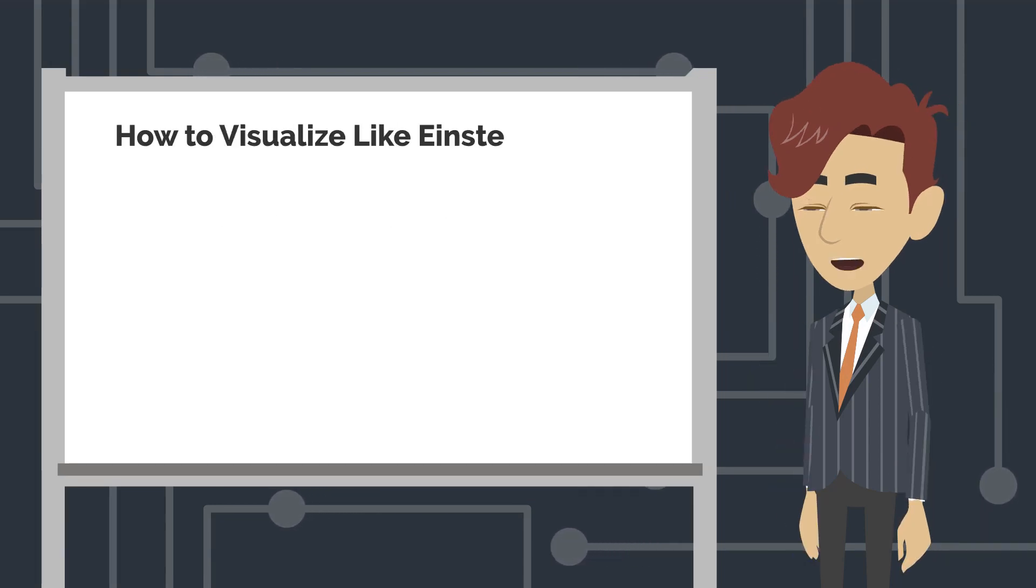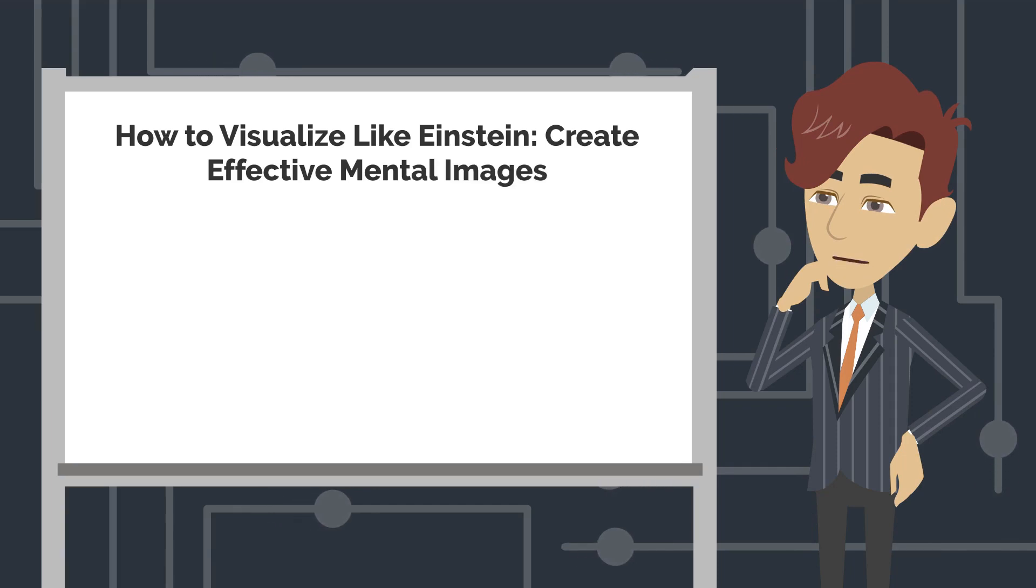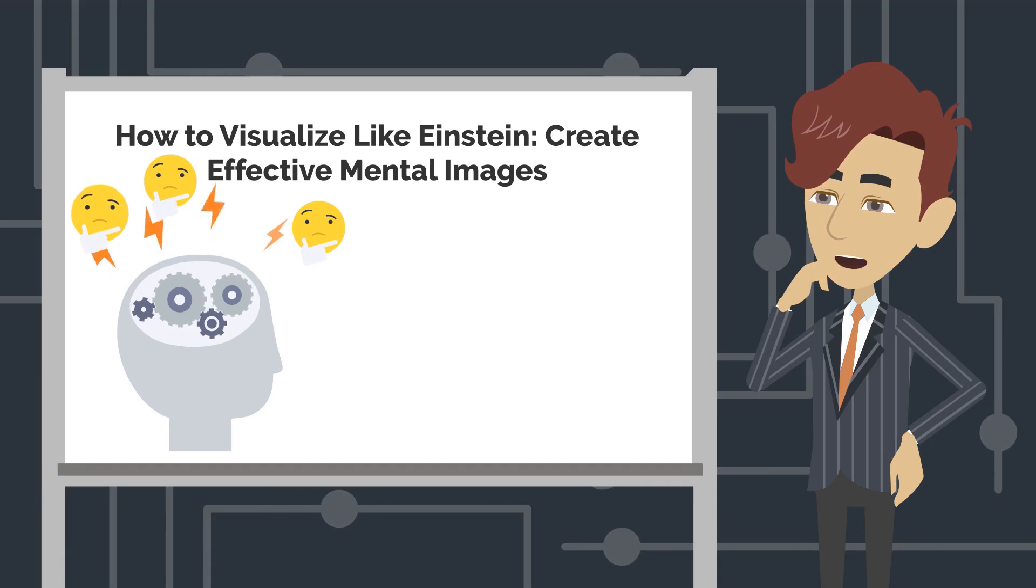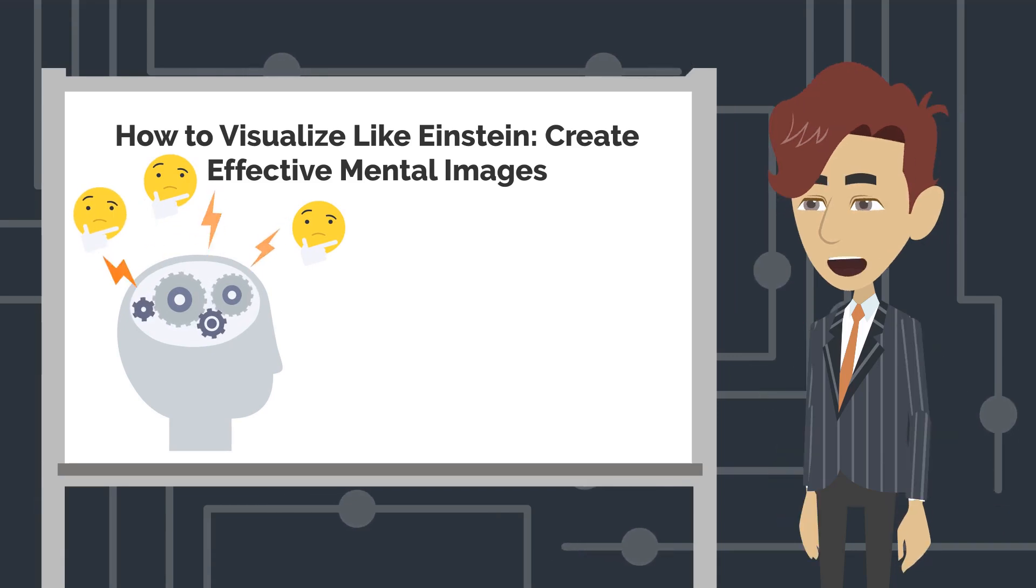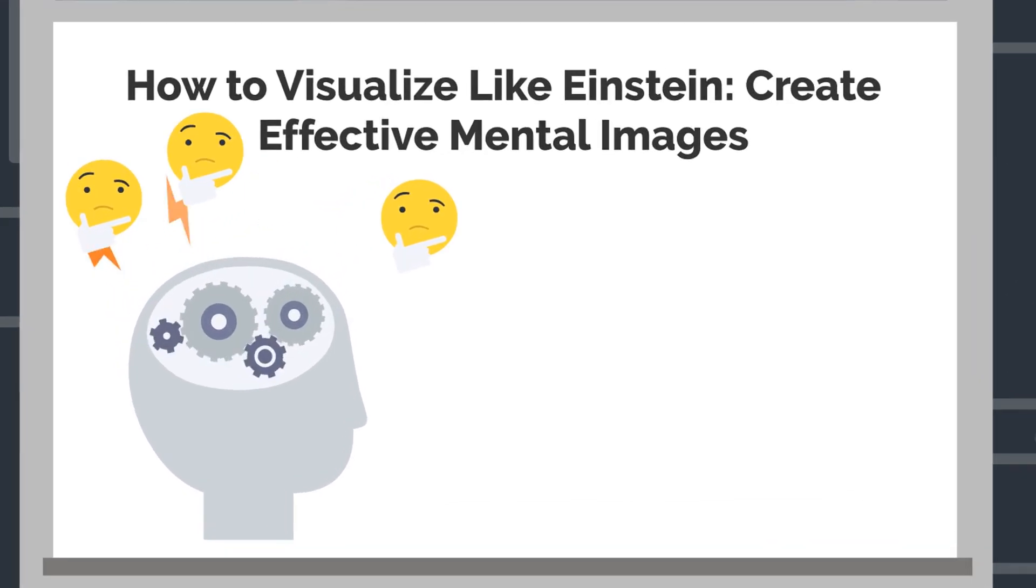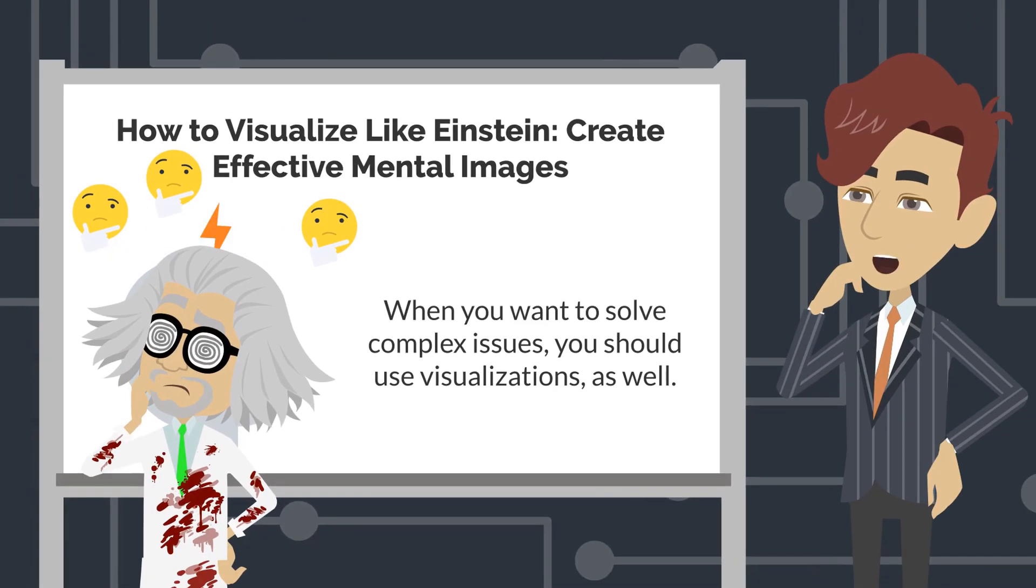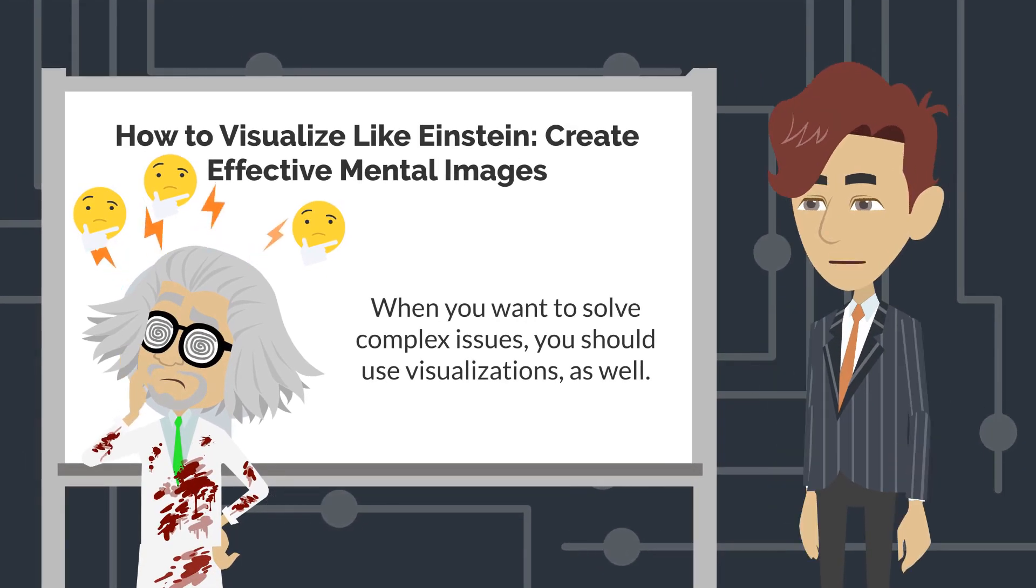How to visualize like Einstein: Create effective mental images. Visualizing is a technique that uses the power of your imagination to create images in your mind. Einstein was known for using this practice to solve difficult problems. He would visualize the problem and then follow his mental image with logic to find a solution. When you want to solve complex issues, you should use visualizations as well.